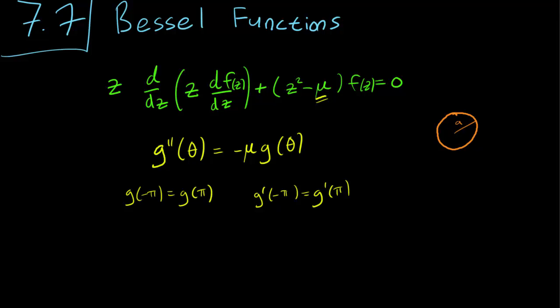In particular, the solution is that our eigenvalues are m-squared for m equals 0, 1, 2, so 0, 1, 4, 9, and so on. And we have two eigenfunctions for each m, either sine m-theta or cosine m-theta.